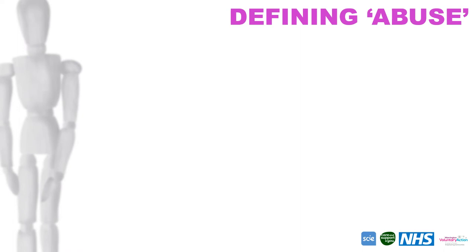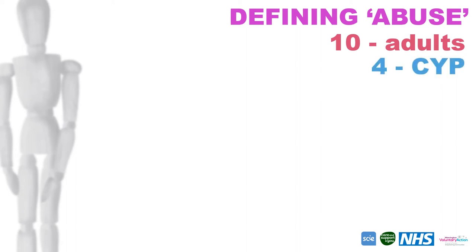When we look at abuse as a big broad concept, there are specific acts and situations within it. There is an ever-growing list as we discover different ways and different groups of people that need specific support. The logos at the bottom of the screen — the Social Care Institute of Excellence, the Care Act, and the NHS — attach ten different types of abuse to adults. Within that ten, there are four that attach to children and young people. These are the big collective ones. All the rest not on this list are either very specific groups of people or specific communities. So these are the nationally defined list.